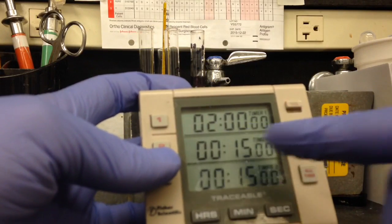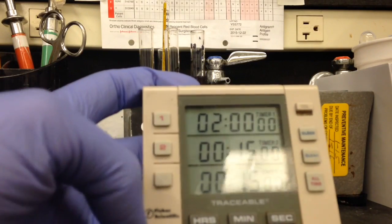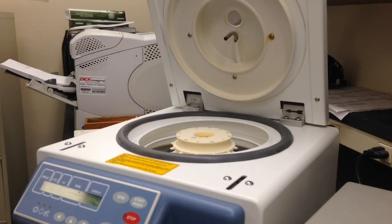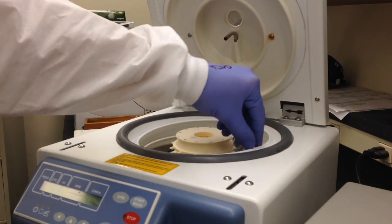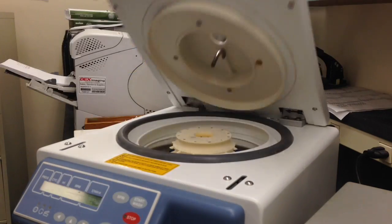You're gonna set a timer for 15 minutes and start it up. After this we're gonna go ahead and take those out of the incubator and we're gonna put them into our cell washer and we're gonna wash them four times.